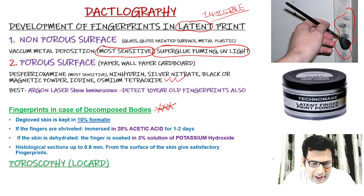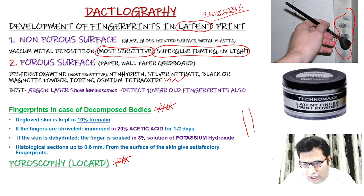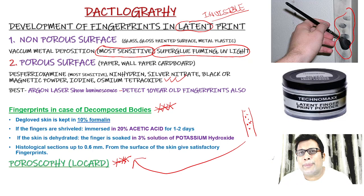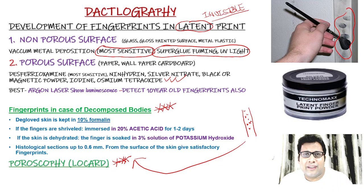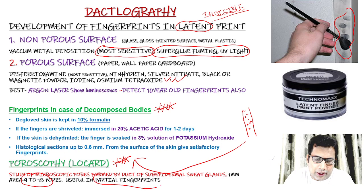What is poroscopy? This is very commonly asked in exams. Poroscopy is the study of pores — the openings of the sweat glands at the epidermis. The size, shape, arrangement, and number of pores are characteristic of a particular person. Poroscopy is useful when only partial fingerprints are available. One millimeter area contains 9 to 18 pores.